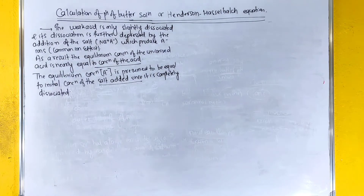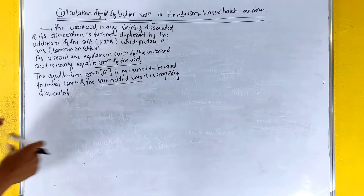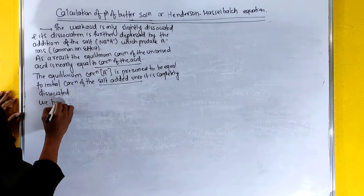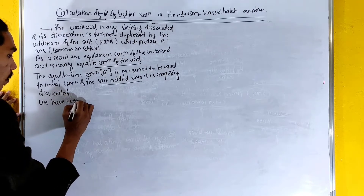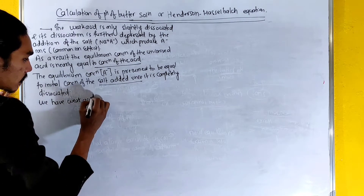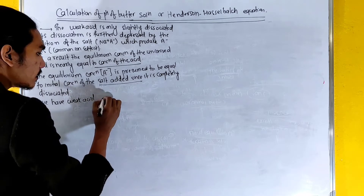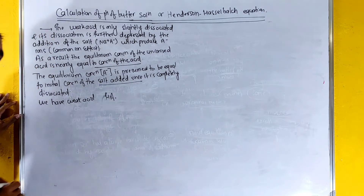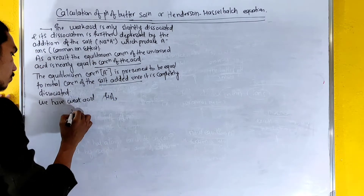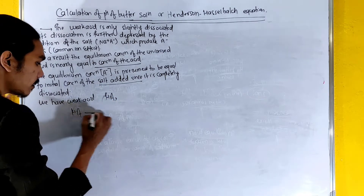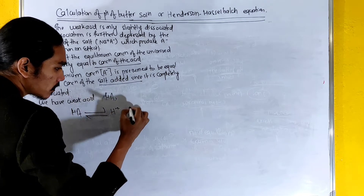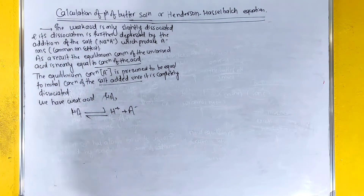Now, for the derivation, we have a weak acid HA. HA dissociates into H plus and A minus. This is the dissociation equilibrium of the weak acid.